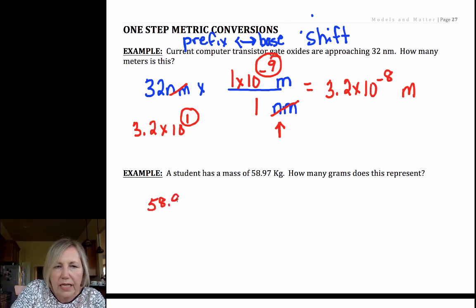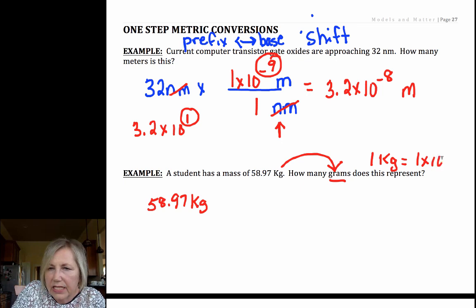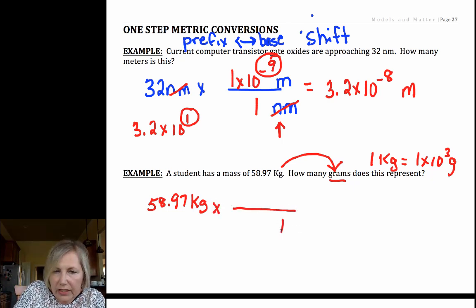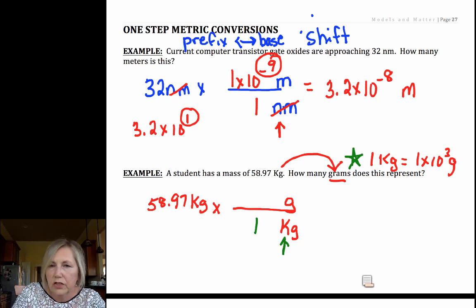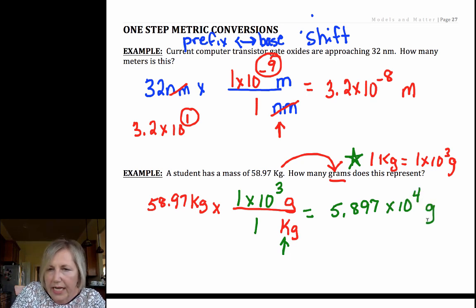My next one. I've got 58.97 kilograms. I want to go to grams. Kilograms to grams is one step. If it helps you to write 1 kilogram equals 1 times 10 to the third grams, I suggest listing those conversion factors. I want to eliminate kilograms. They're in the numerator, so I put them in the denominator. Grams would go in the numerator. Find your prefix. That's where the 1 goes. Writing your conversion factor like that can help you so you don't put the scientific notation in the incorrect location. Scientific notation by the base unit that's lonely because there's no prefix. So I have 5.897 times 10 to the fourth grams. Units, sig figs. Watch those conversion factors.